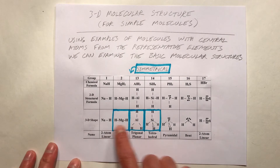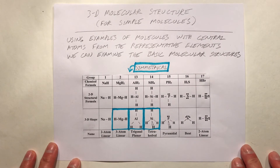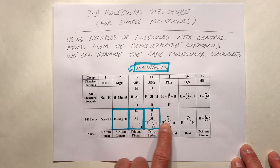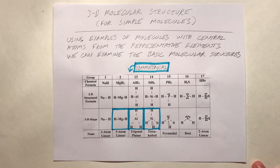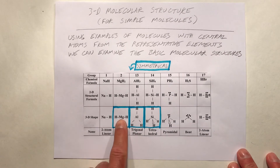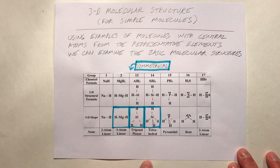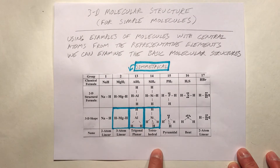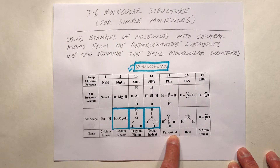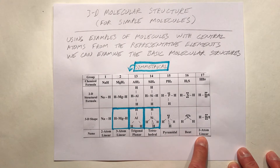We can look at the different three-dimensional structures for representative elements at the center of molecules. We call these: two-atom linear, three-atom linear, trigonal planar, tetrahedral, pyramidal, bent, and two-atom linear again.